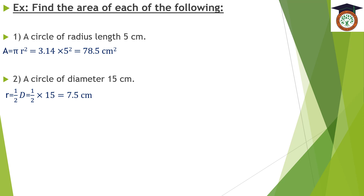The second one: a circle of diameter 15 centimeters. We should remember that the radius equals half the diameter, so R equals half of D, which equals half times 15, equals 7.5 centimeters. After that, the area equals π times R squared, which equals 3.14 times 7.5 squared.